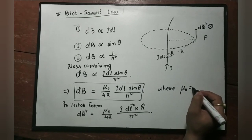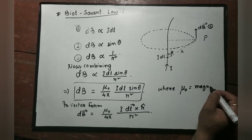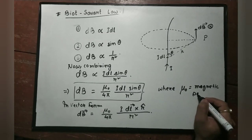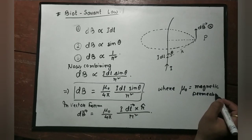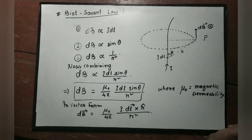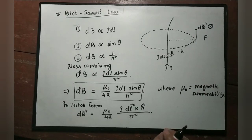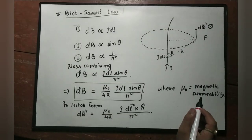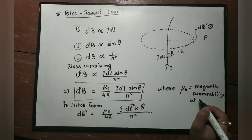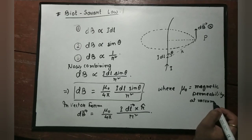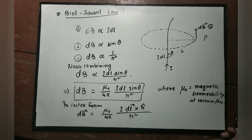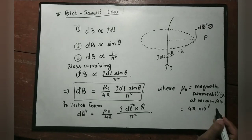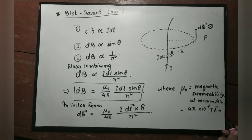Here, mu naught is the magnetic permeability. Magnetic permeability is the property of the medium — in this case vacuum or air. The value of mu naught is 4 pi into 10 to the power minus 7 Tesla meter per ampere.